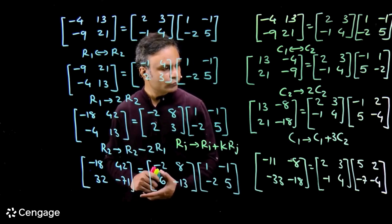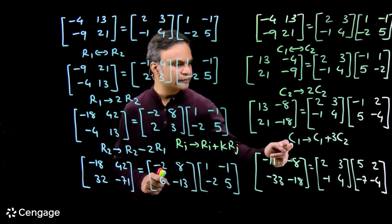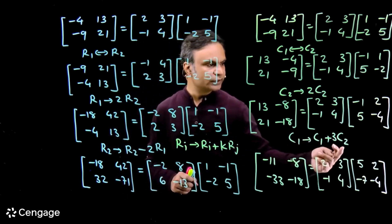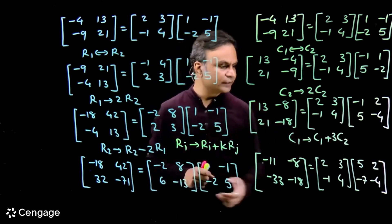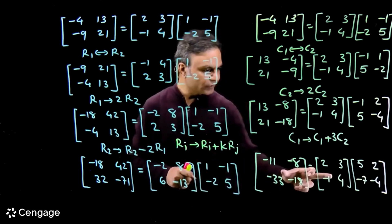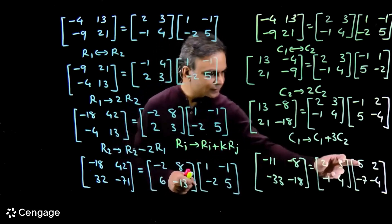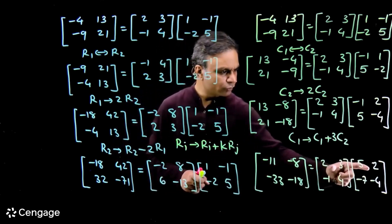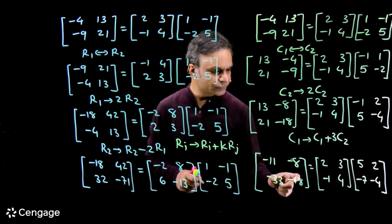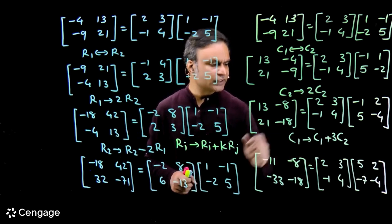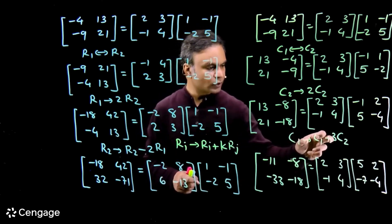Similarly, if we do one more column transformation like C1 changes to C1 plus 3C2, in these two matrices simultaneously we have this new system. In this system also, the product of these two matrices is equal to the matrix we get after this transformation.